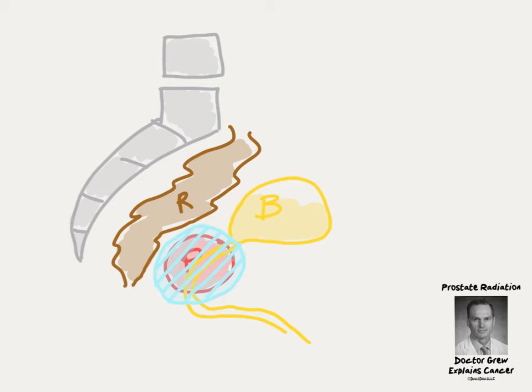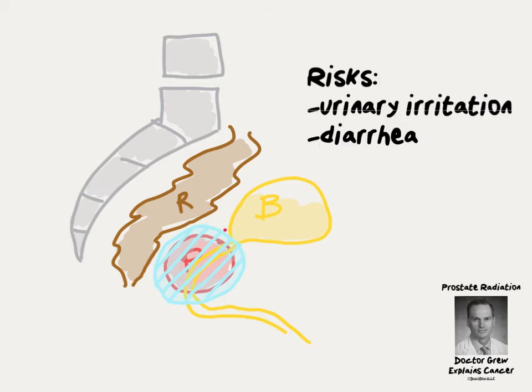The risks of treatment are predominantly determined by the other organs in the area. Irritation of the bladder and urethra can cause more frequent or urgent urination, as well as waking up more at night to urinate.